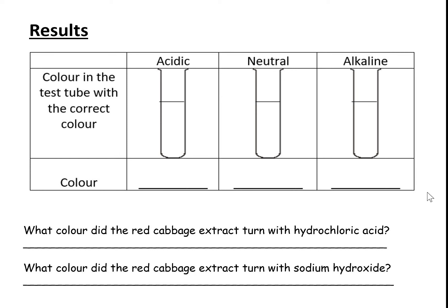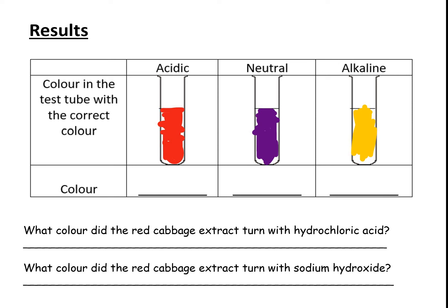So back to our results. Now we've seen the video, you need to colour in these test tubes with the colours you saw — hopefully a lot neater than I've done it here on the computer. The acidic solution went red, the neutral solution went purple, and the alkaline solution went yellow. I've put 'slash green' here because depending on how much red cabbage you use, sometimes it goes green rather than yellow — so if you look things up online, you may see it described as going green in an alkali. If you need to make any corrections, remember to do so in your different colour pen.